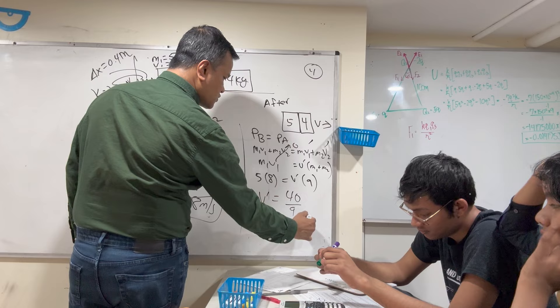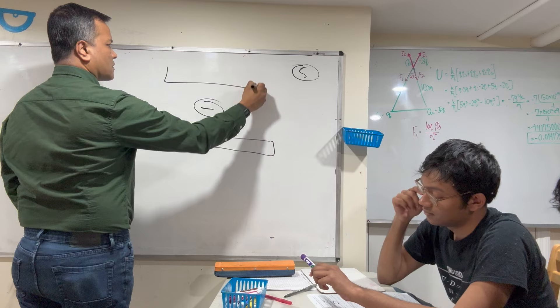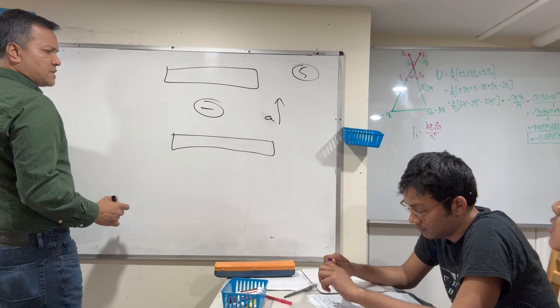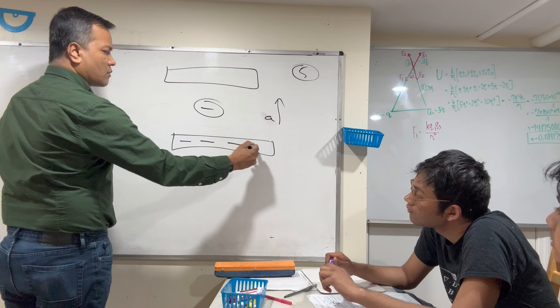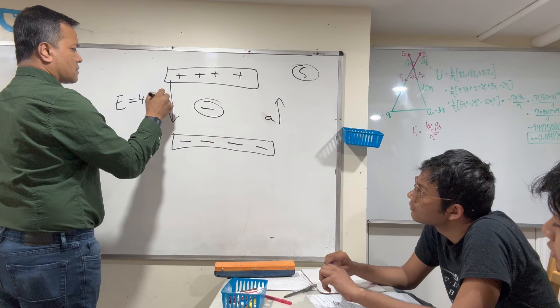Problem number five: An electron is placed between two electrically charged plates and accelerates toward the upper plate. The electric field between the plates is 4.8 × 10⁻¹¹ Newtons per Coulomb. Find the acceleration of the electron. The upper plate is negative and the lower is positive. The electric field goes from positive to negative, magnitude 4.8 × 10⁻¹¹ N/C.